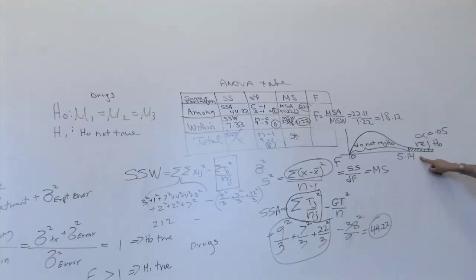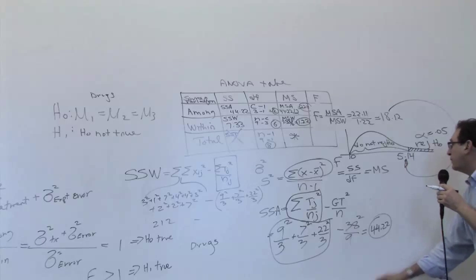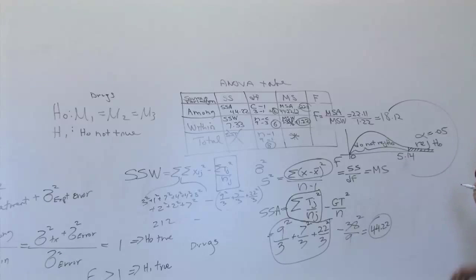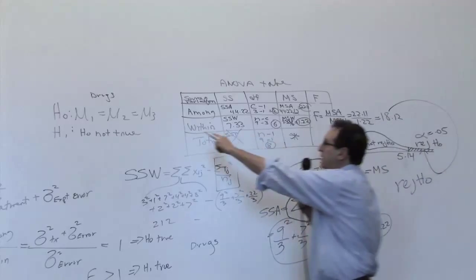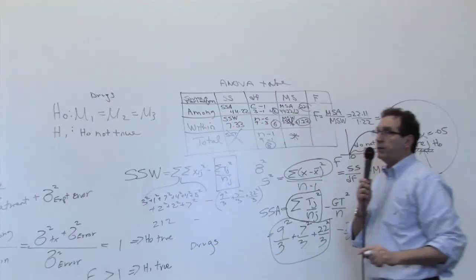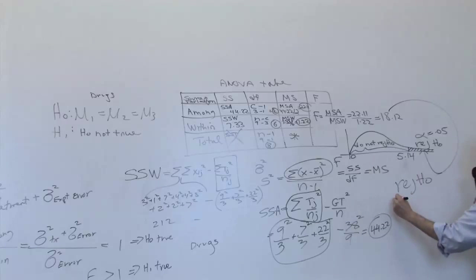The last step is to make a conclusion or decision. Where is 18.12? 18.12 was much past 5.14. It's way into the rejection region. And therefore, the only possible conclusion is to reject H0. That's the answer to the question. And if the book said, for example, is there evidence of a difference among the drugs, what would that be? Yes or no? Yes, we just proved that the H0 is false, that there is evidence of a difference and not all the same. So the drugs are not the same.